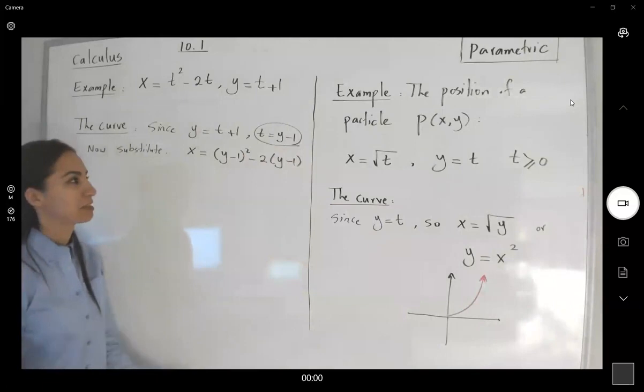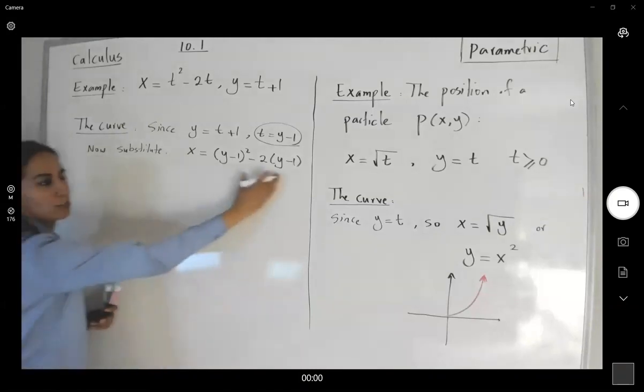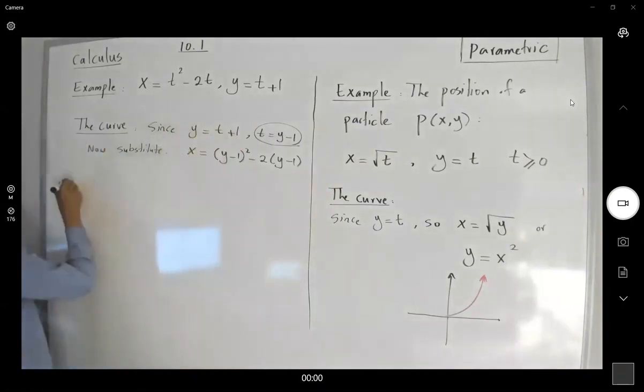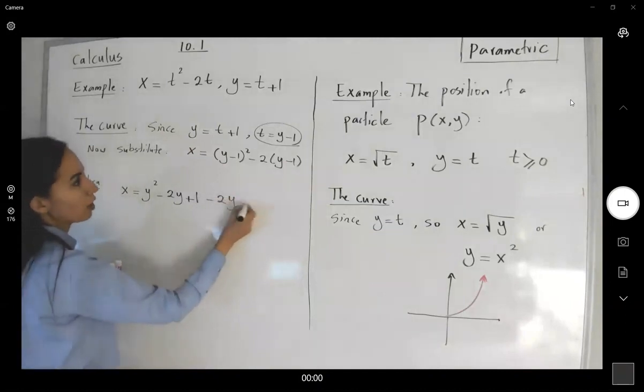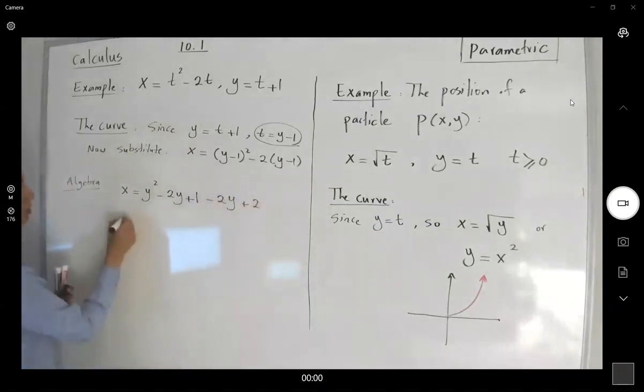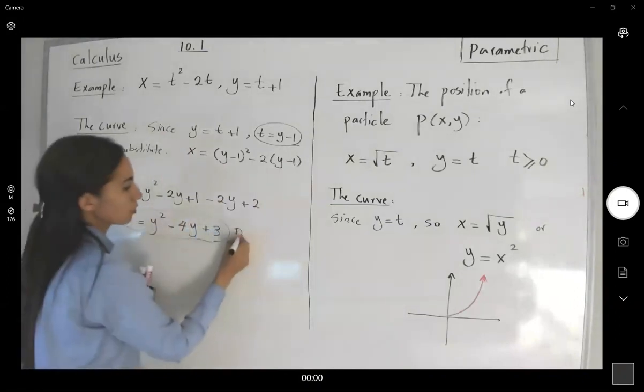So you can simplify this. The redundant calculus part - the rest is algebra. So in algebra, x is y squared minus 2y plus 1, minus 2y plus 2. So my x is y squared minus 4y plus 3. Now use Desmos.